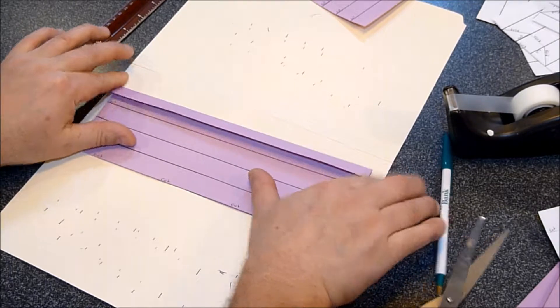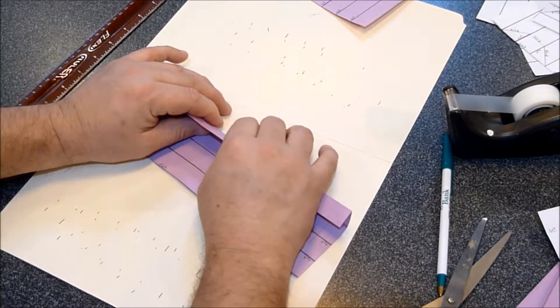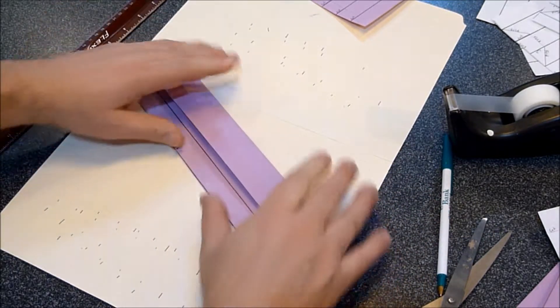Then, the same thing, just fold on the score lines where you scored it. It should fold easily.